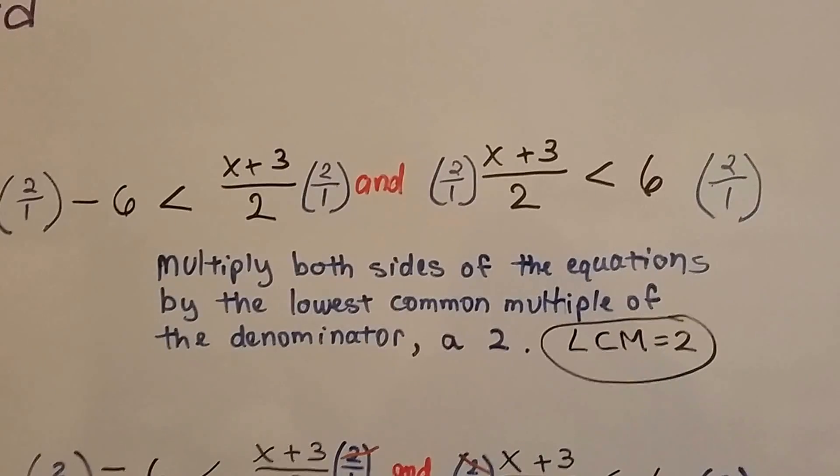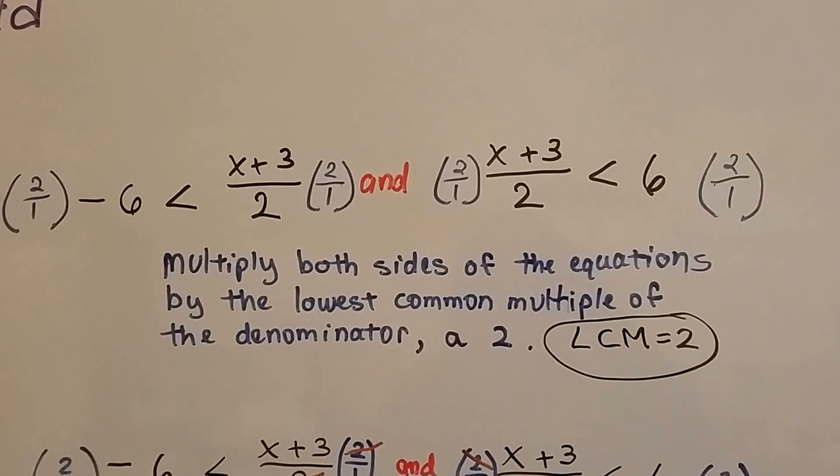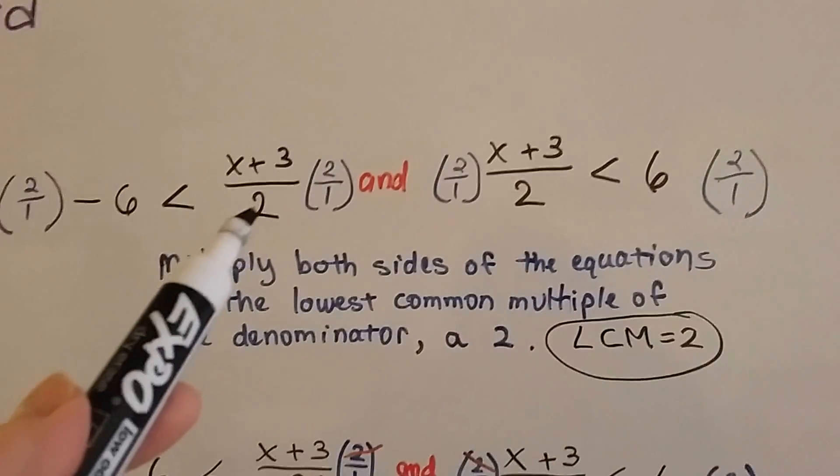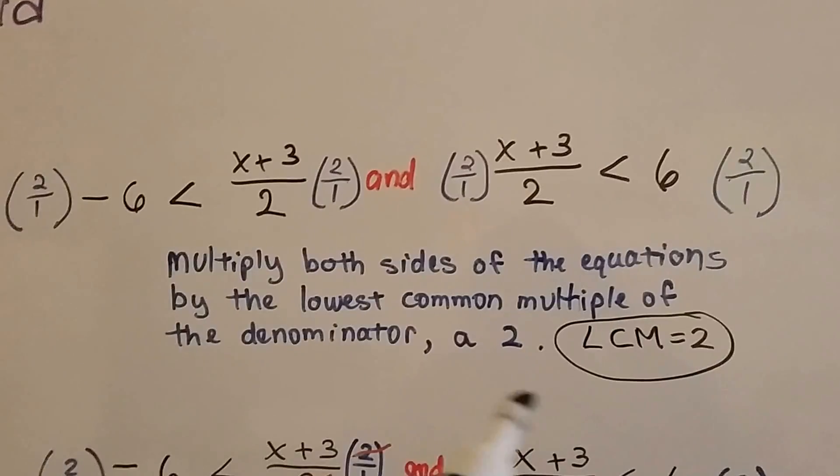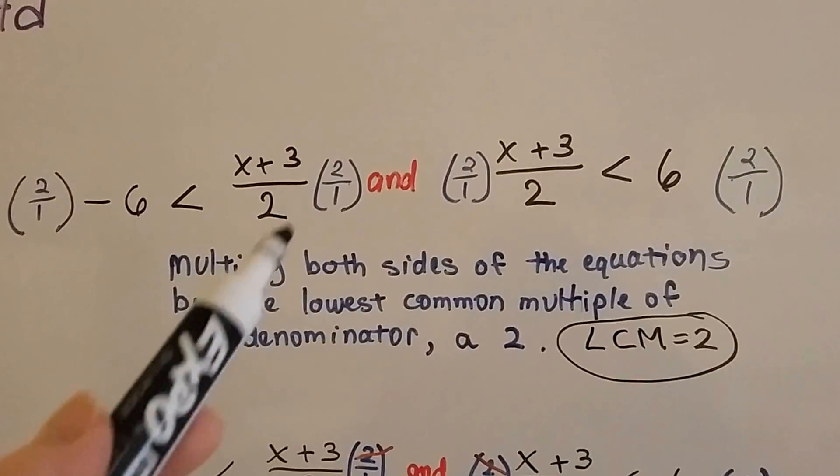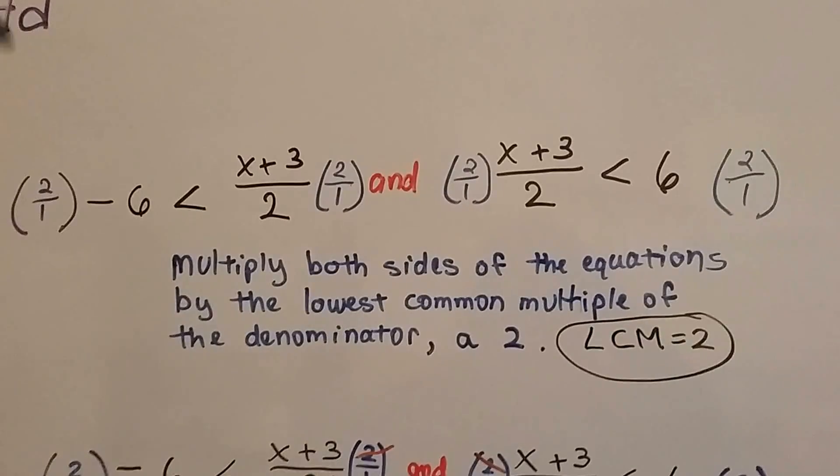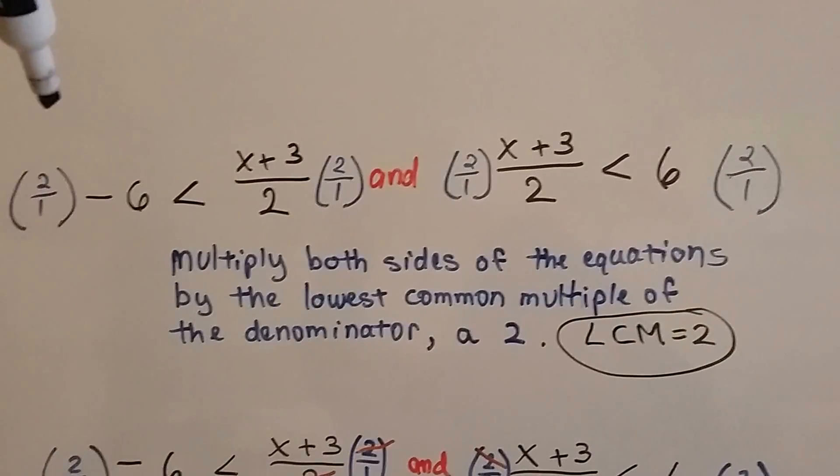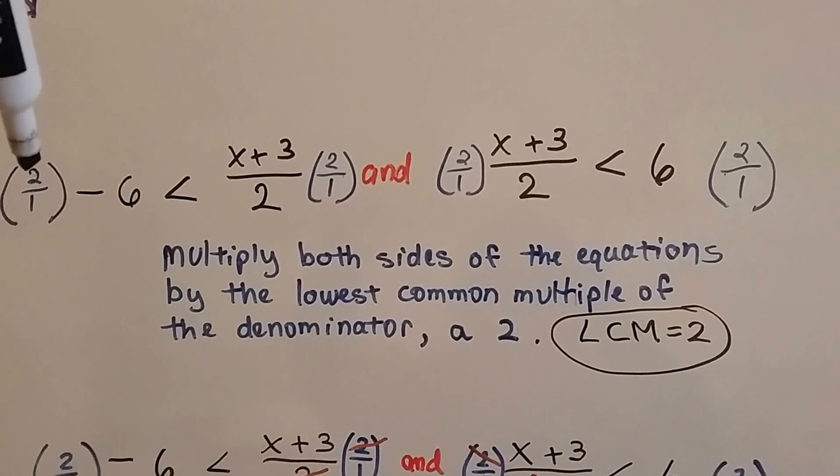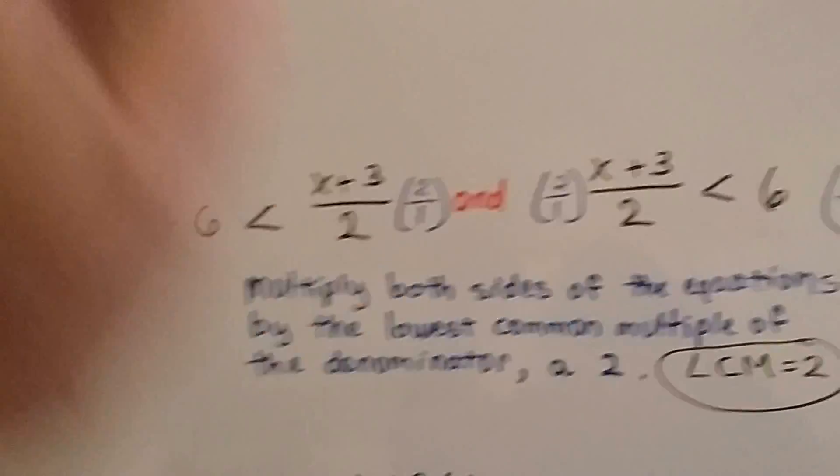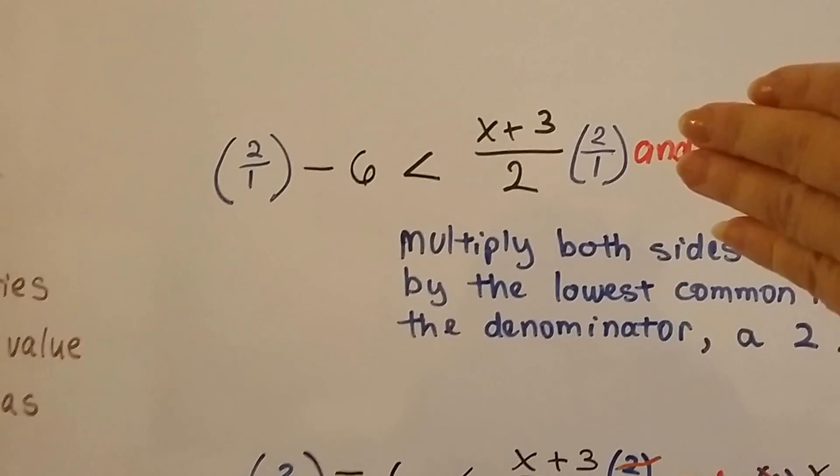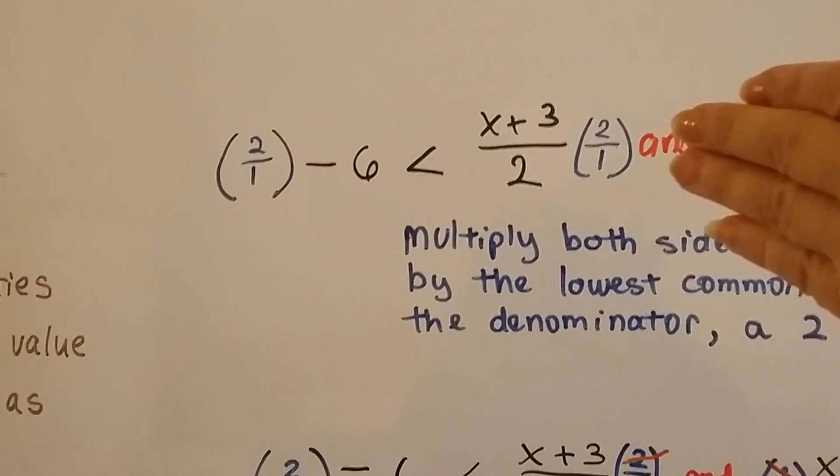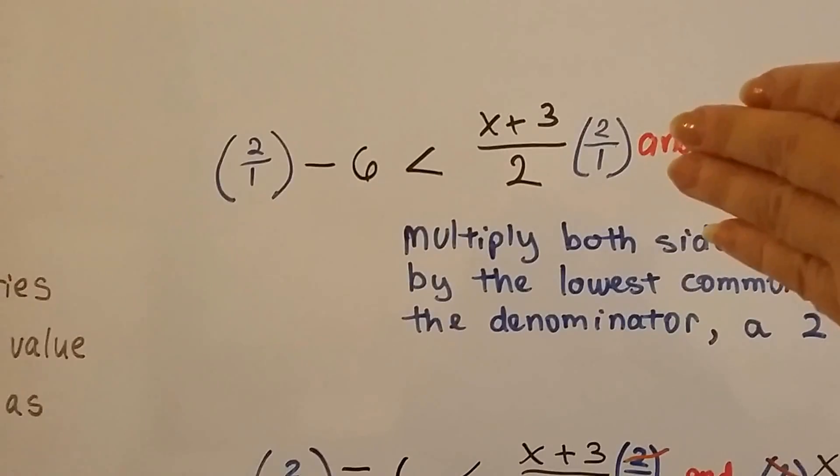We multiply both sides of the equation by the lowest common multiple of the denominator. The lowest common multiple of this denominator is 2. So our LCM is a 2. So we multiply each of the terms, this side of the inequality sign and this side of the inequality sign. Ignore this for now because we're just doing this one. We're going to solve each one separately.